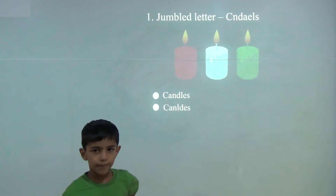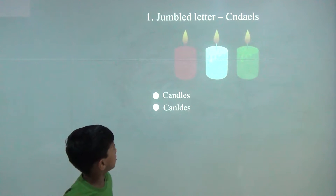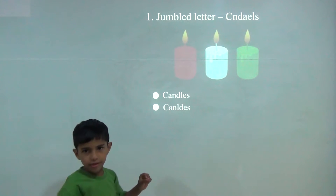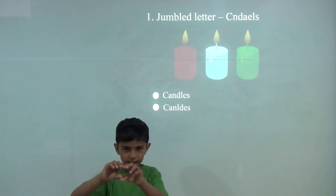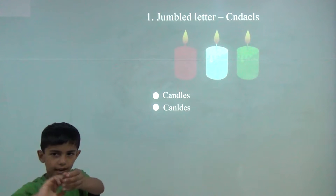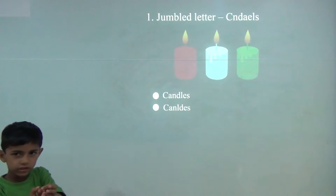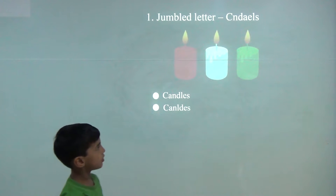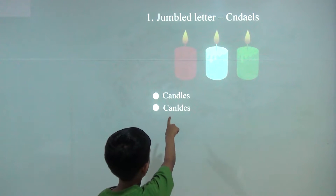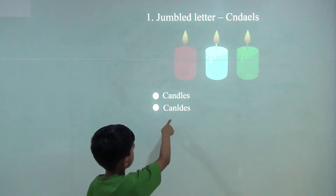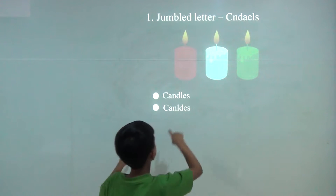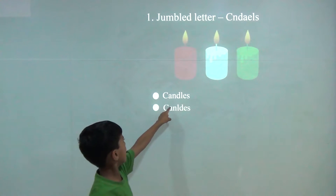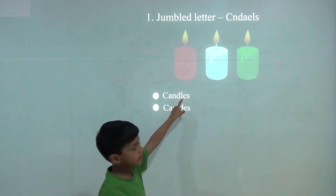Today we will learn Jumbled Letters. Jumbled letters means they are not arranged properly — we have to arrange them. Candles. So the answer would be first: C-A-N-D-L-E-S.